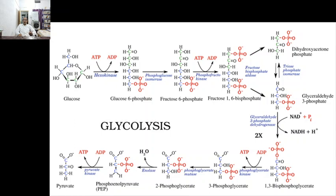Hexokinase binds to the outer mitochondrial membrane at sites where the voltage-dependent anion channel (VDAC) is located, placing the complex in close association with the adenine nucleotide translocator (ANT), which spans the inner mitochondrial membrane and facilitates exchange of cytoplasmic ADP for mitochondrial ATP. Since VDAC and ANT may play an important role in regulating mitochondrial permeability transition and release of apoptotic factors such as cytochrome C, hexokinase is suspected to participate in the apoptotic pathway. Mitochondrial hexokinase activity seems to be required for growth-factor-induced cell survival, and AKT/protein kinase B signaling promotes association of hexokinase with VDAC.